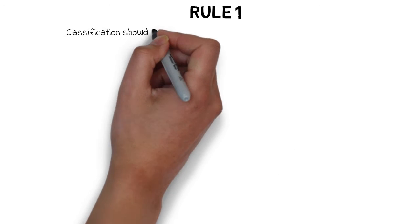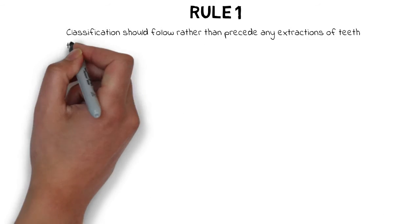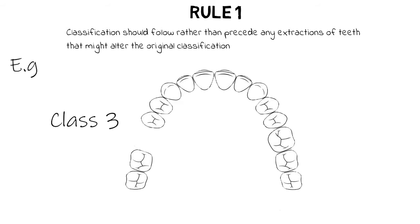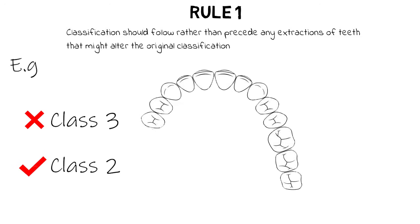Rule 1 states that classification should follow rather than precede any extraction of teeth that might alter the original classification. This means the classification should be done after any extraction has been performed, not before, since extraction may alter the classification. For example, an arch that is currently Class 3 may become Class 2 after extracting the second and third molars. So classification should always be done after performing extractions.